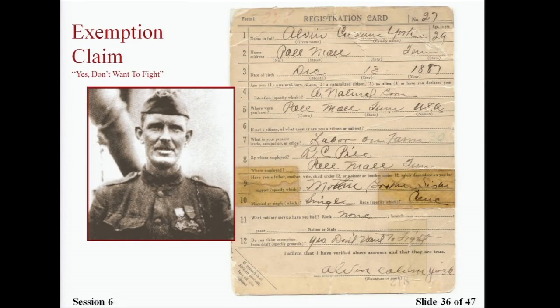This is the card of Alvin York, who had an exemption claim — he was a conscientious objector. However, his claim was not enough to keep him out of military service and he was actually drafted. There are all kinds of interesting exemption claims on these cards, and the fact that draft board members knew most registrants personally always seemed to come back to haunt those who claimed exemptions.